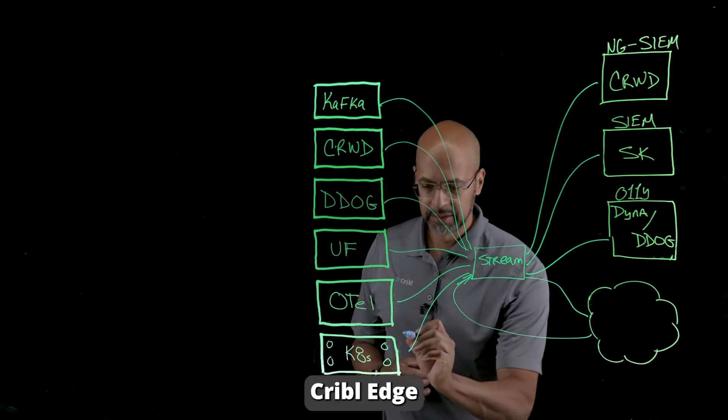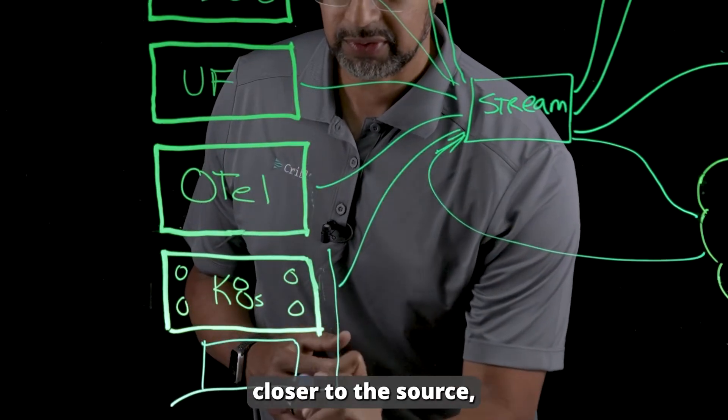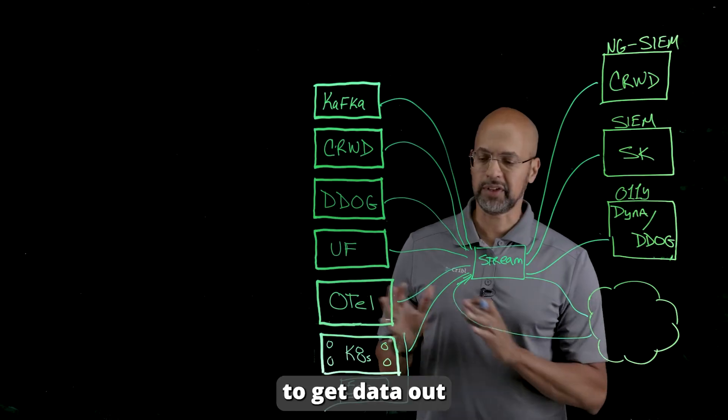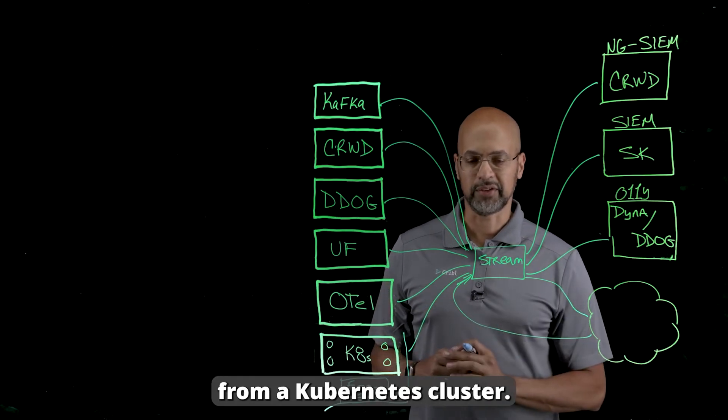Cribble Edge brings that intelligence closer to the source, simplifies fleet management, and is the simplest way to get data out from a Kubernetes cluster.